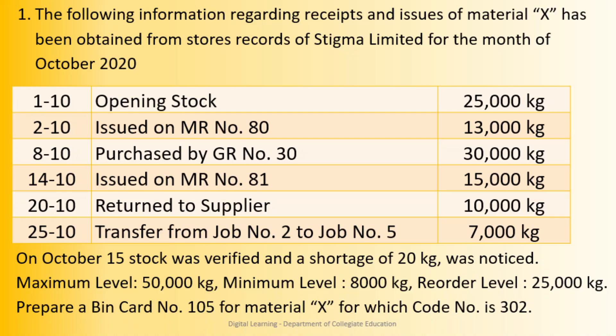We have been asked to prepare bin card number 105 for Material X, for which the code number is 302. Looking at what is given: receipts and issues of Material X are in kgs. On 1st there is opening stock, issues on 2nd and 14th, purchase on the 8th, a shortage on 15th, return to supplier on 20th, and a transfer from Job No. 2 to Job No. 5 on 25th. Please note that inter-department or inter-job transfers are not entered in bin card. Other details to show are maximum level, minimum level, and reorder level.